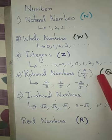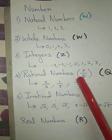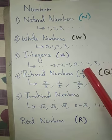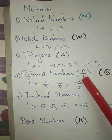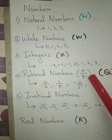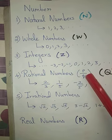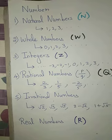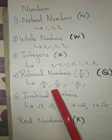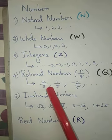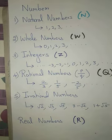Next are rational numbers, also called fractional numbers. They are expressed in the form of P by Q, where Q should not be equal to 0. P can be 0 but Q cannot. Rational numbers are denoted by capital Q. Examples include 2/3, 1/5, −2/5, −3/4 and so on.